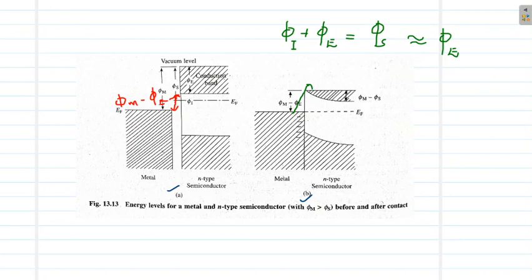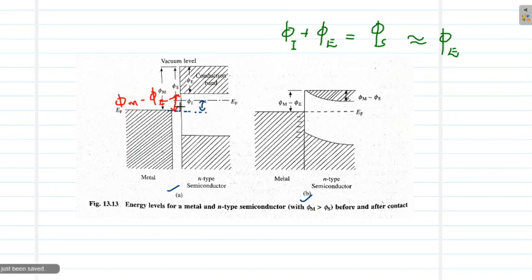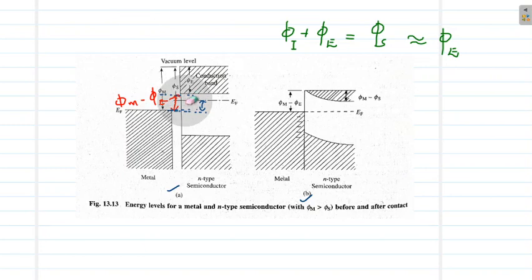Before forming a junction, moving from the metal to the semiconductor side, the energy difference is φ_m minus φ_e. After contact forming, the energy barrier from metal to semiconductor is still φ_m minus φ_e. On the semiconductor side, however, there is a significant change: the Fermi level is lowered to match the metal's Fermi level. The conduction band of the semiconductor is lowered by φ_m minus φ_s.